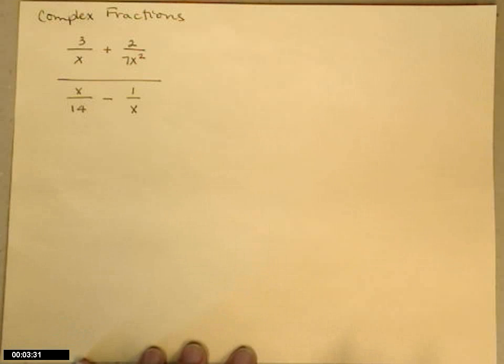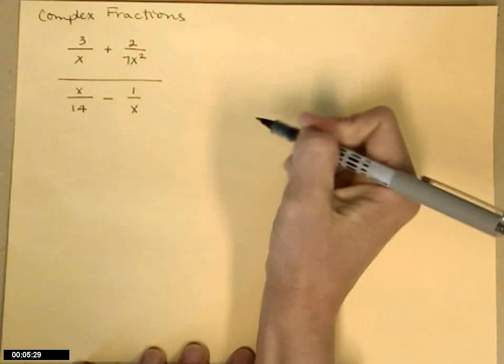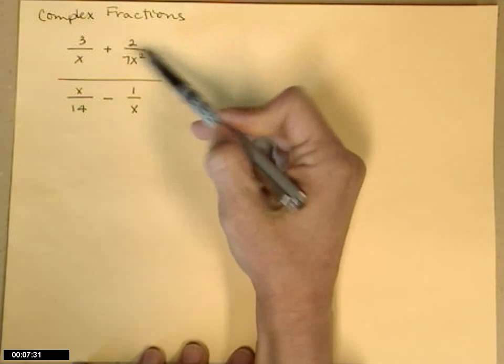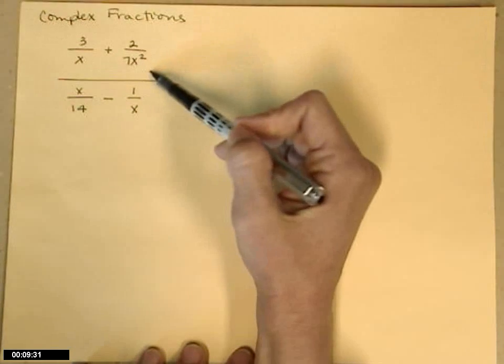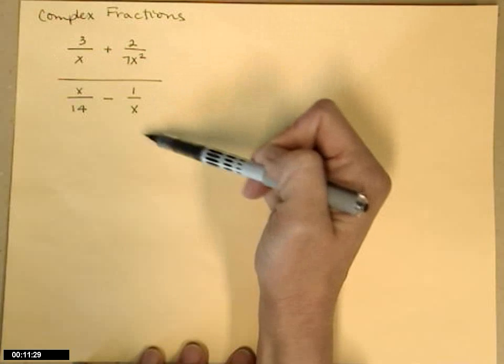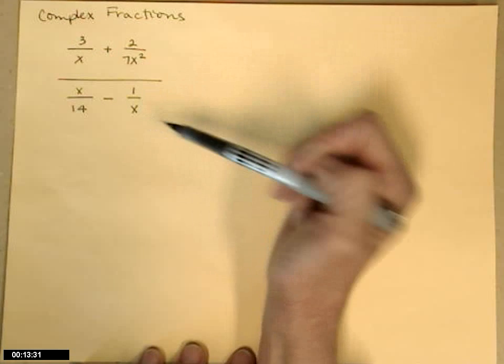Complex fractions mean fractions within fractions. Here's an example: 3 over x plus 2 over 7x squared, divided by x over 14 minus 1 over x.